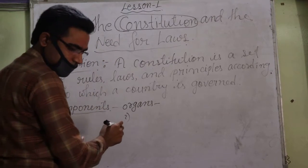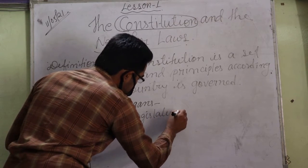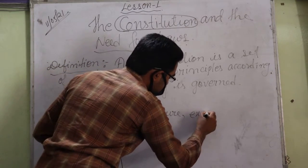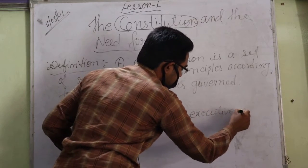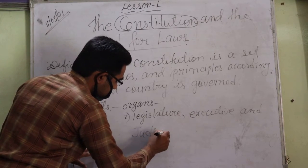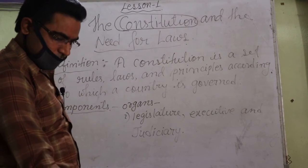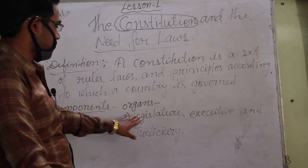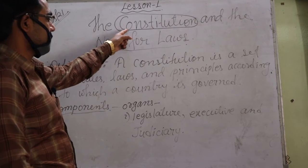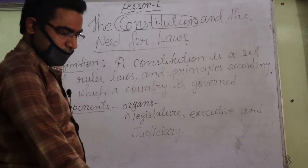These are: legislature, executive, and judiciary. These are the three components of the government whose powers are defined by the Constitution, according to which our country is governed.